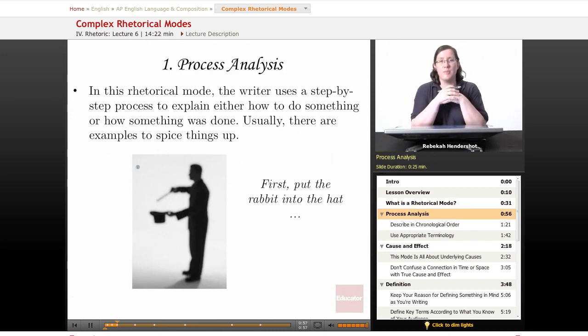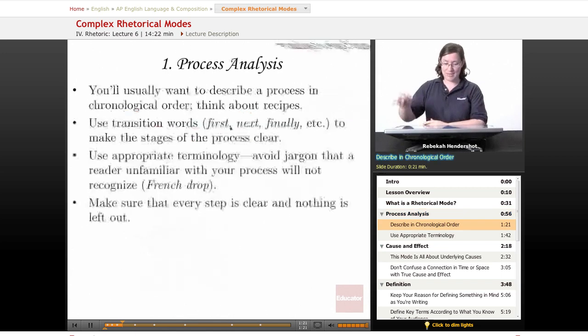The first of our complex rhetorical modes is process analysis. In this mode, the writer uses a step-by-step process to explain either how to do something or how something was done. Usually there are examples to spice things up. So it's a step-by-step explanation. If you're explaining how to do a magic trick, step one: first, put the rabbit into the hat. This presumably would be the first step in pulling a rabbit out of a hat.